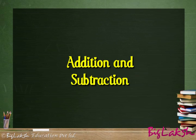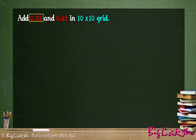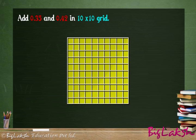In this module we will discuss the addition and subtraction of decimal numbers. We will add 0.35 and 0.42. Let us see this expression in a 10 by 10 grid. Mark 0.35 in this square by shading 3 tenths and coloring 5 hundredths.